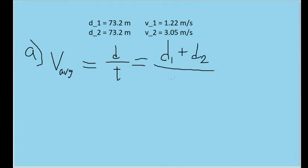However, in order to find the time, we still want to find the time for each segment. So we want to find what T sub 1 is, the time for the first part when he's walking, and T sub 2, the time for the second part when they're running.